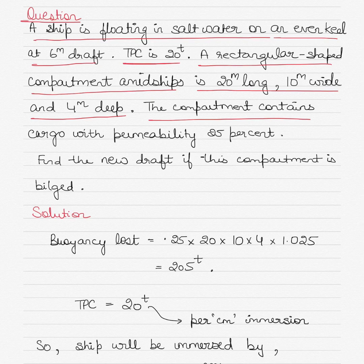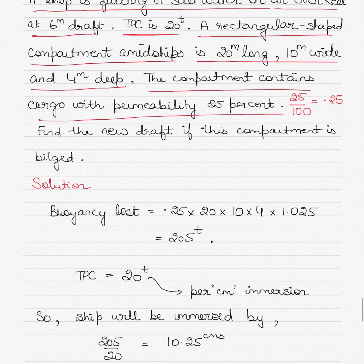The compartment contains cargo with a permeability of 25 percent. When I say 25 percent permeability, immediately when you hear percentage, this is 25 by 100, because it's 25 percent, so the permeability will be written as 0.25. You cannot say 25 percent in the exam; in the formula you cannot put 25 percent, you have to put a number. So 25 percent means 25 by 100, which is 0.25. What you have to find is the new draft if the compartment is bilged.